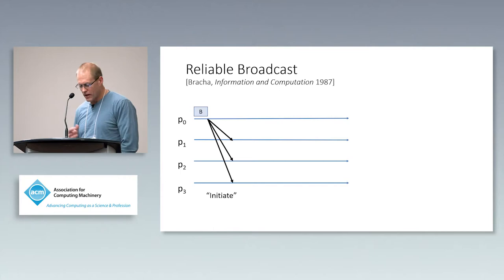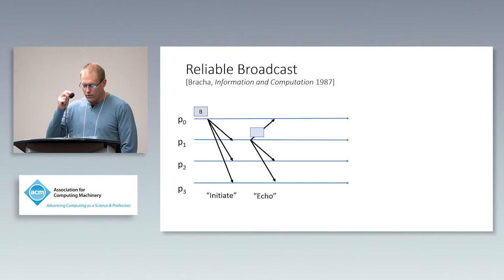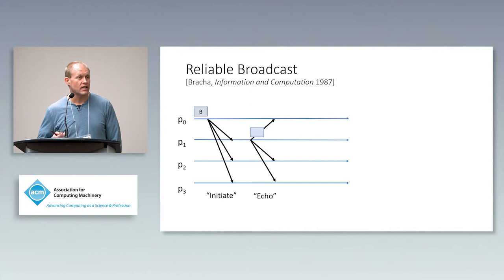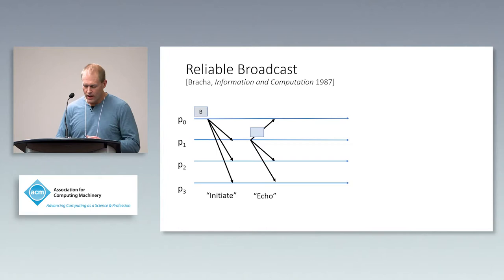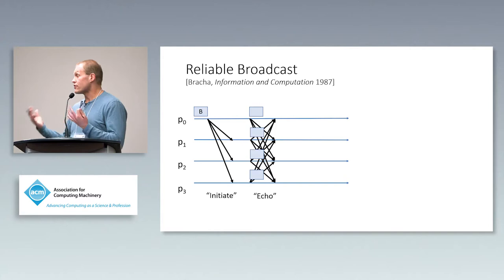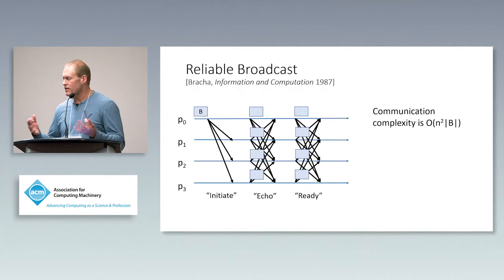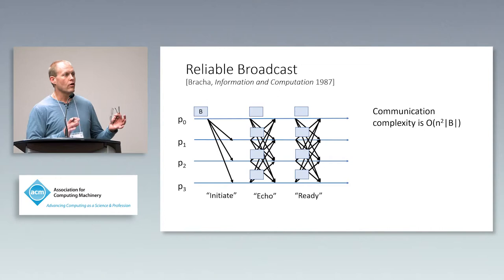In Bracha's protocol, the broadcaster P0 sends message B to everyone, and then replicas echo the broadcast message by resending it to everyone else. You echo a message when you receive it from the broadcaster or upon receiving f+1 other echoes. In the normal mode of operation, everybody echoes the message, meaning you incur O(n² · |B|) communication complexity. There's another round of 'ready' messages, but by the time you've done the echoes you've already incurred that asymptotic cost.